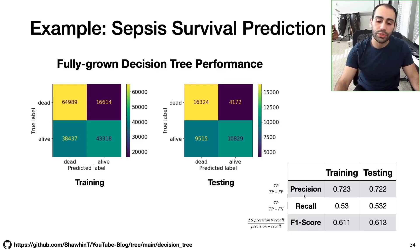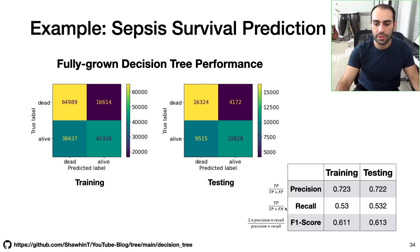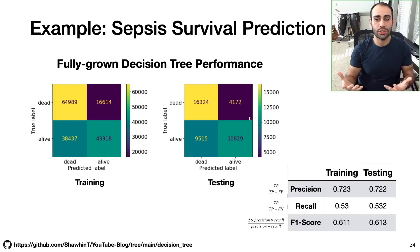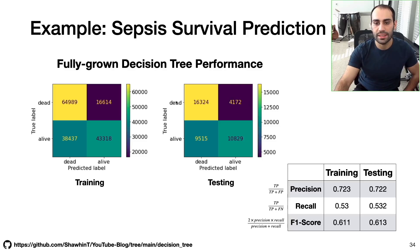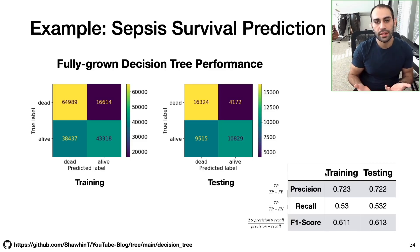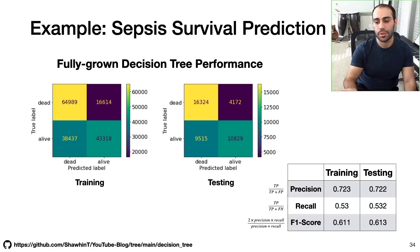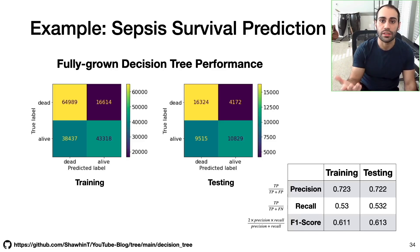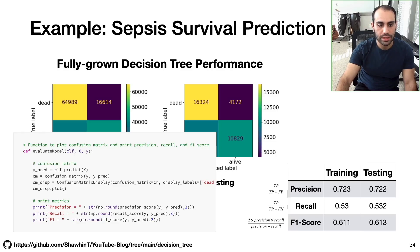In this case, precision is something we care more about than recall, because in this context we probably care more about false positives than false negatives. A false positive corresponds to the case where the decision tree predicted that the patient would survive but they did not. If we're using this decision tree to quantify patient risk, there is much more downside to predicting survival for a patient who dies than predicting death for a patient who survives. Which metric you use to evaluate your model depends on the problem and context — sometimes you care equally about both, sometimes more about one than the other.